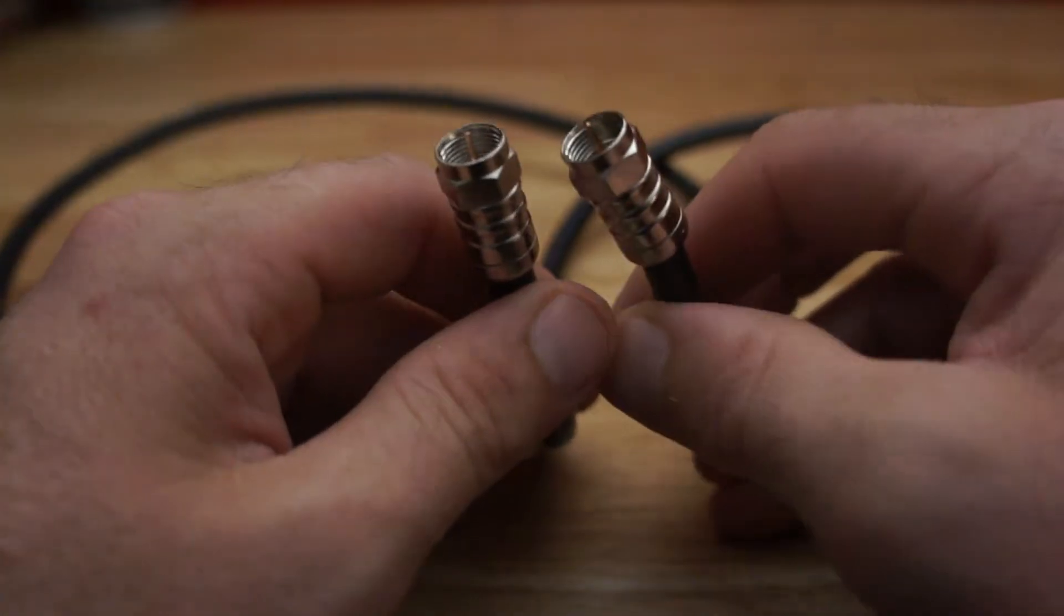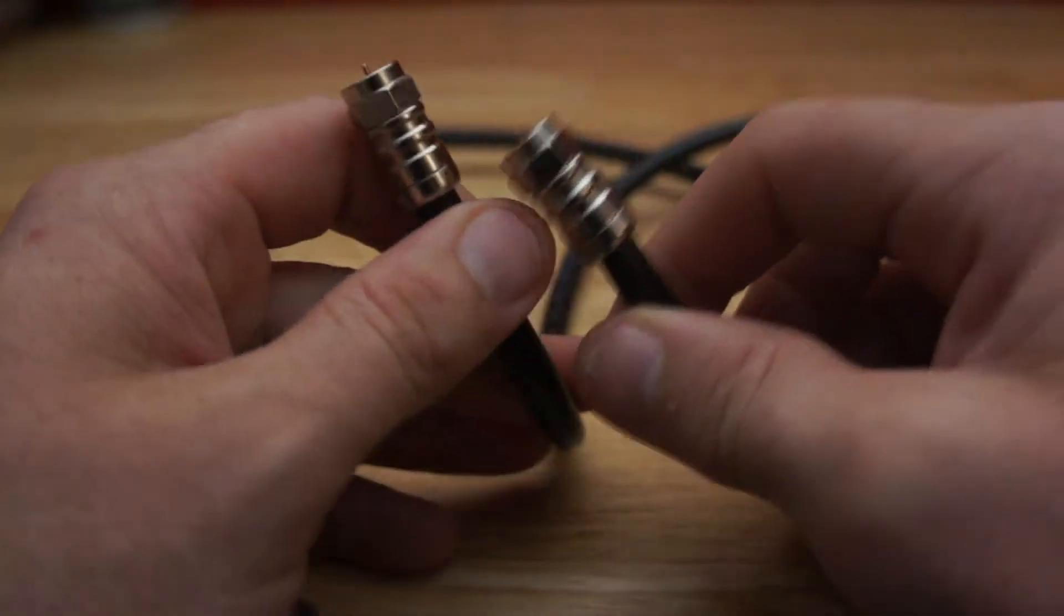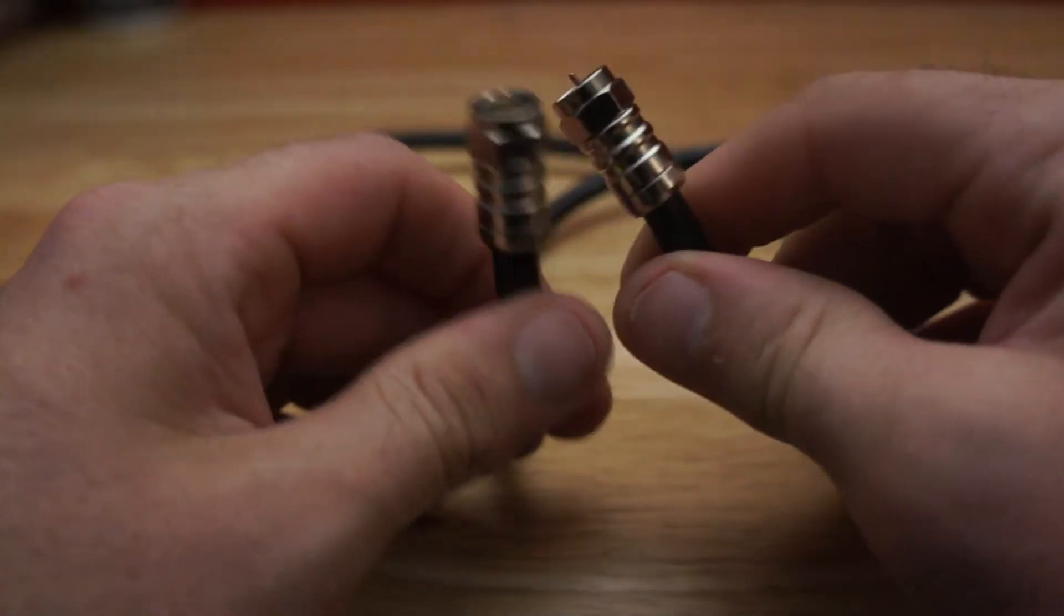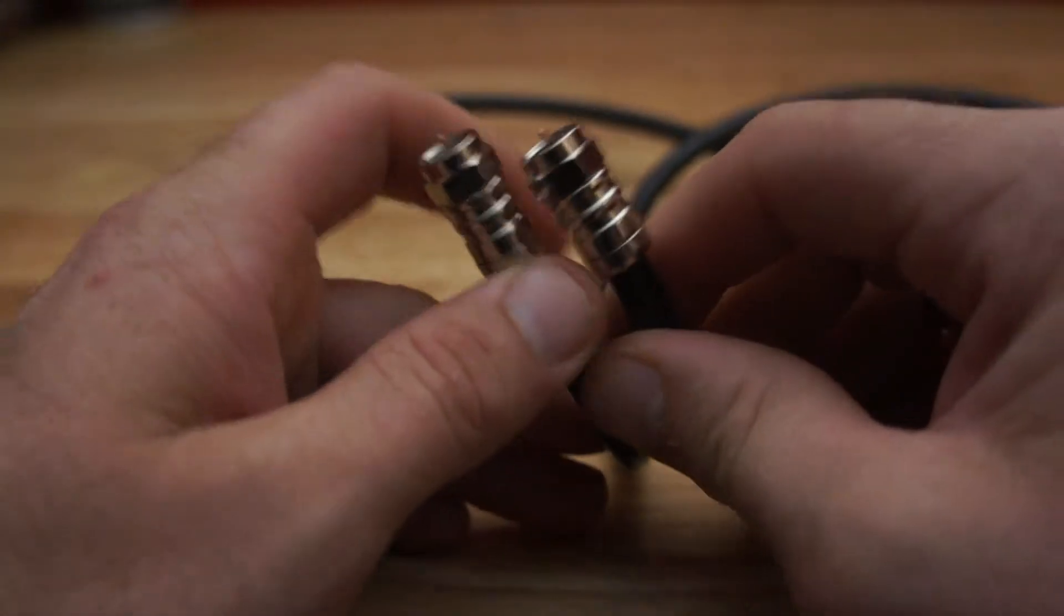The F-type connection goes from the wall to your Foxtel box. Screw it on the wall, screw it on the Foxtel box. It carries a satellite signal and maintains signal integrity.